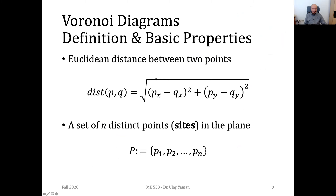To calculate the distance between any two points we compute the Euclidean distance. For points P and Q, take the differences between their X and Y coordinates, square each difference, sum them, and take the square root of the total. In the plane we have n number of points — n number of sites — represented with a capital letter P, which is the set of distinct sites on the plane.